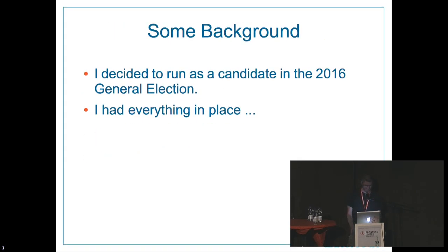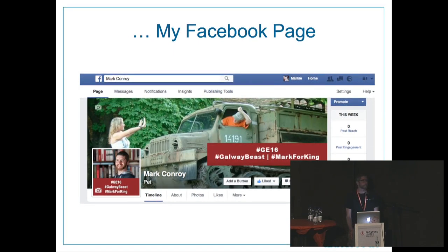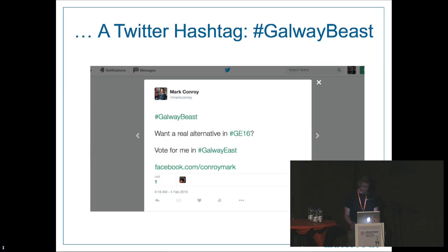Some background: we had an election in Ireland about three months ago and I decided — well, I fake-decided — to run in the election just to annoy some local politicians and steal some thunder. I had my poster campaign ready, I was going to sort things out. I got myself a Facebook page, my wife tried to stop me. I had my hashtags — the Galway Beast, my constituency is Galway East — and Mark for King, I wanted to be the King of Ireland. I got one retweet from a person I'm kind of scared of.